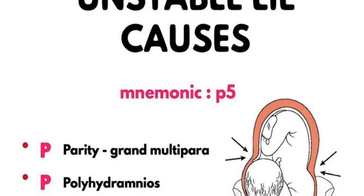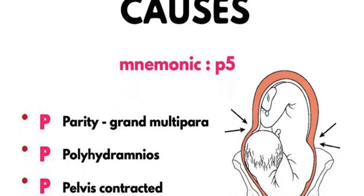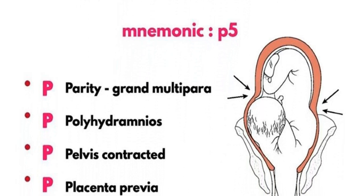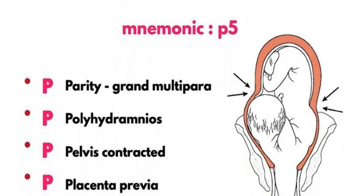The third P is the pelvis. If the pelvis of the mother is contracted, it can also cause the unstable lie of the fetus.